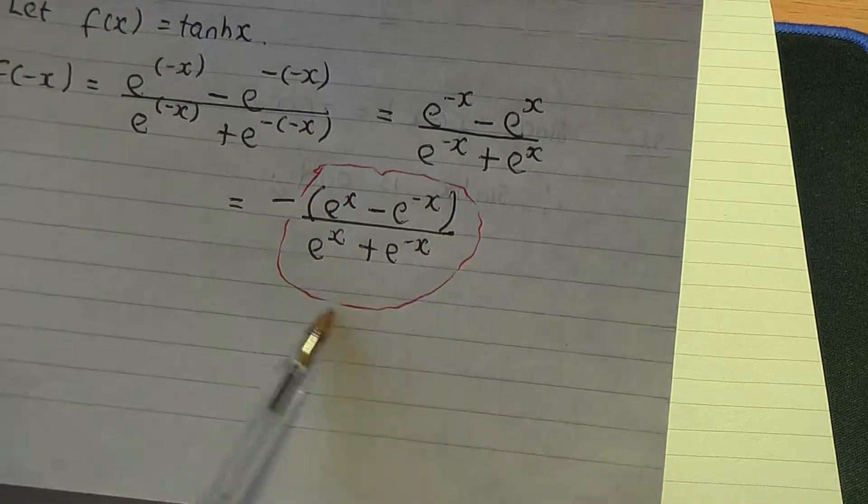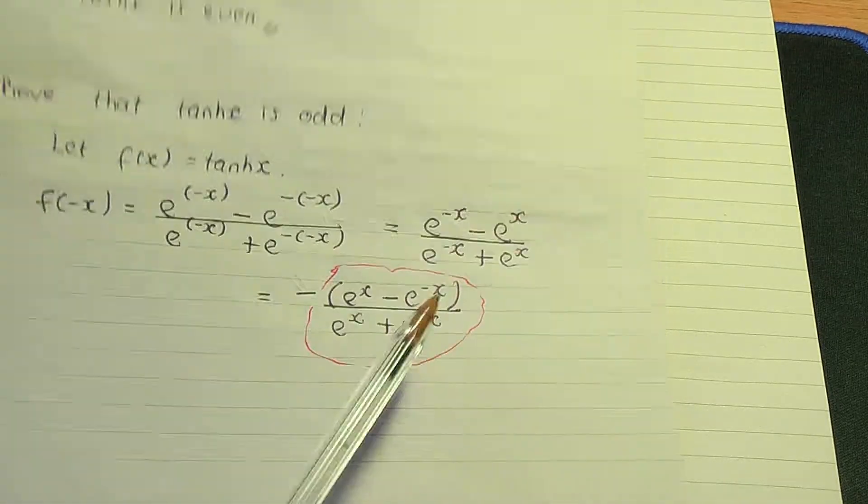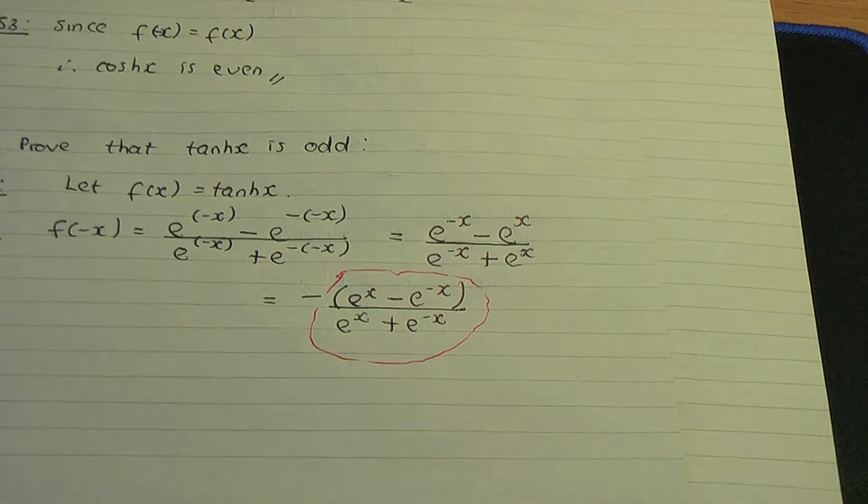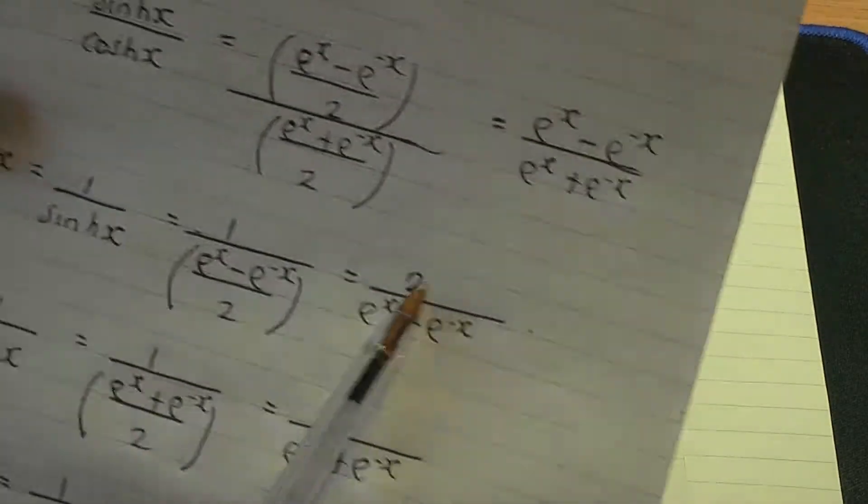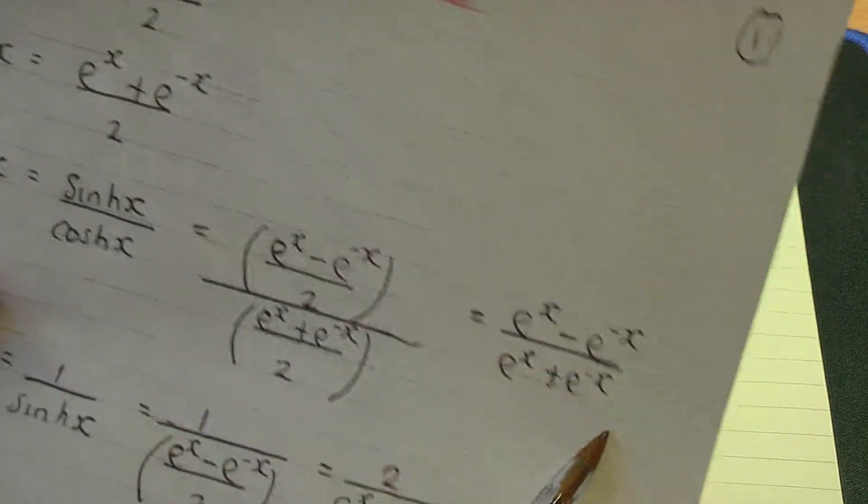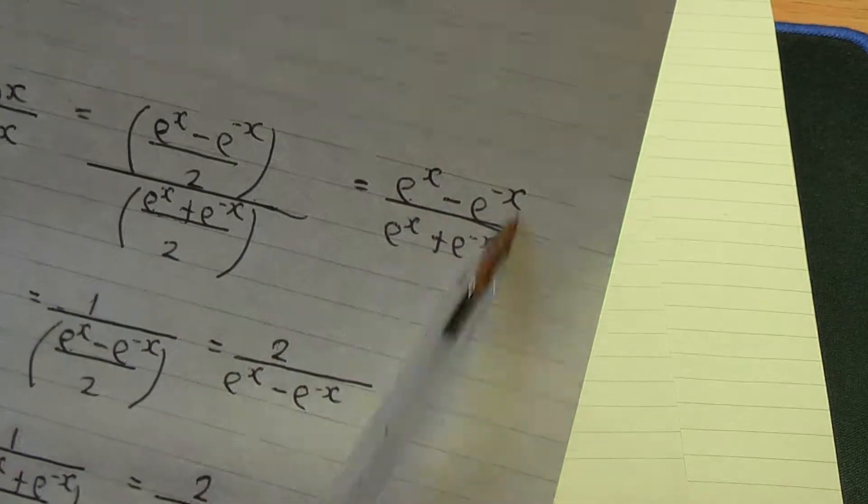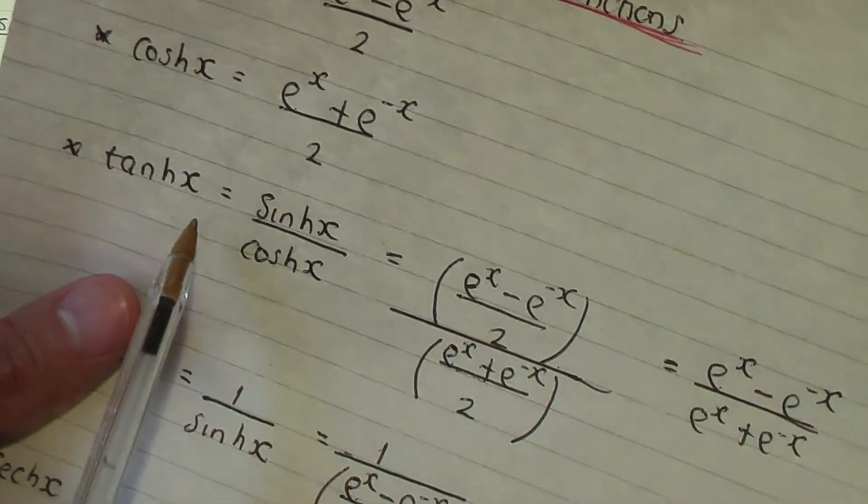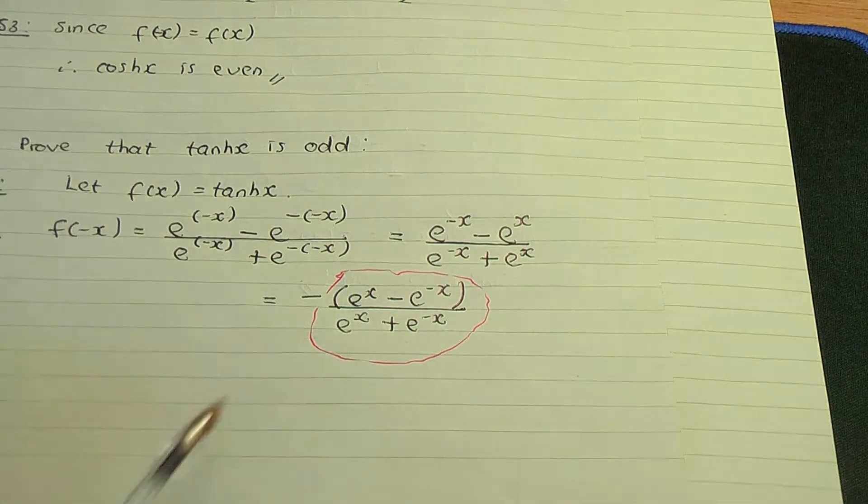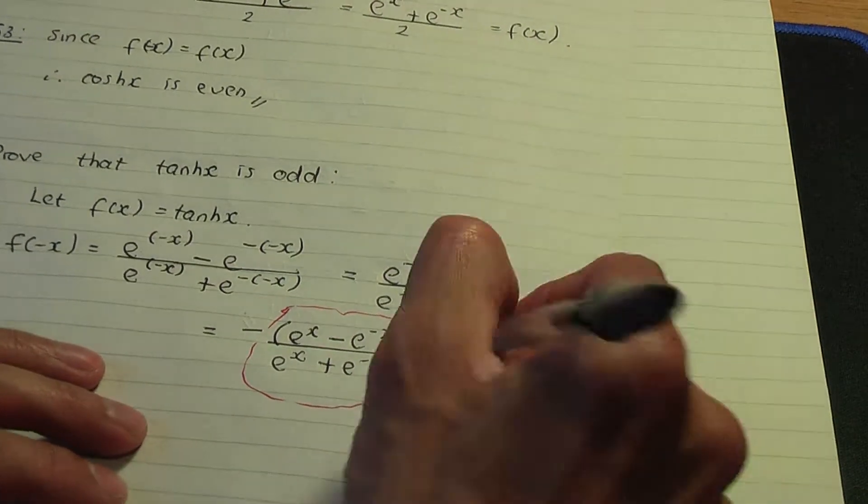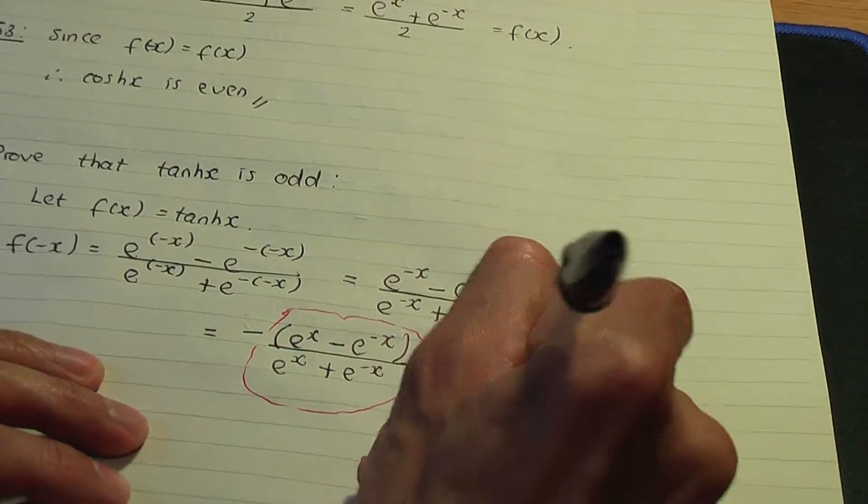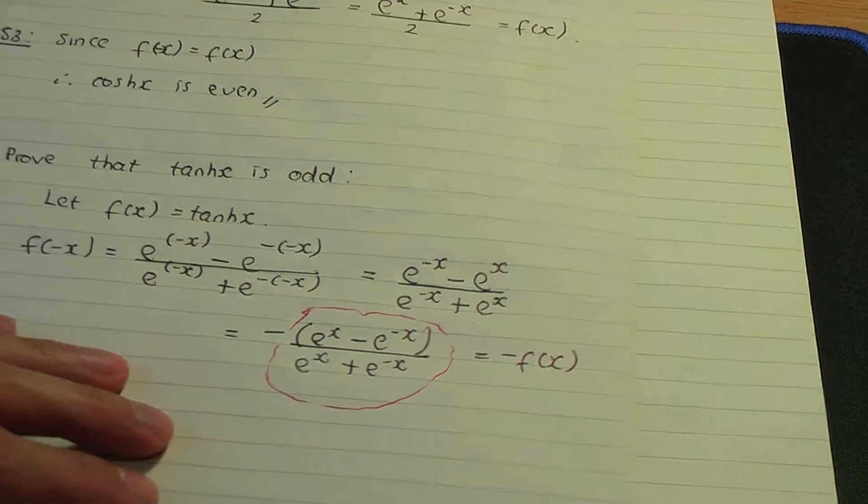That's the definition of hyperbolic tan. If you go to the definitions page of the notes, this is precisely what we have, that's the definition of hyperbolic tan. So in this case, that is -f(x).